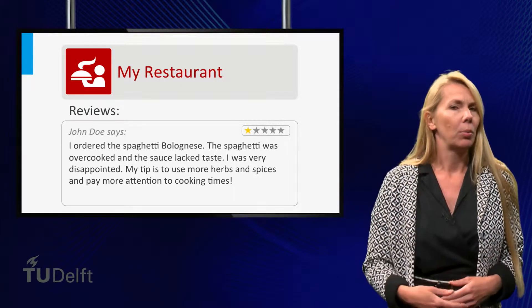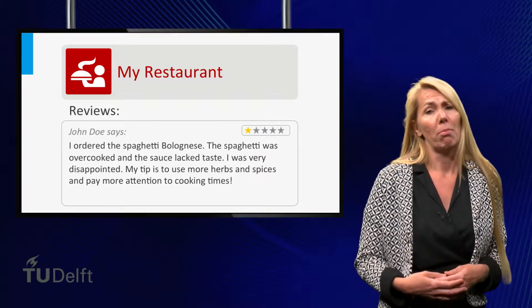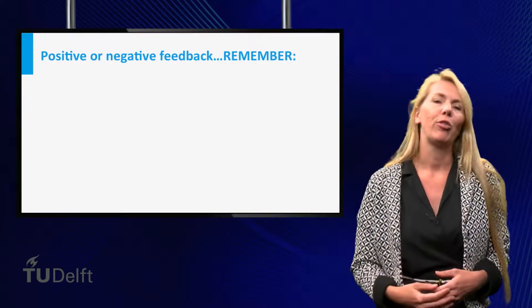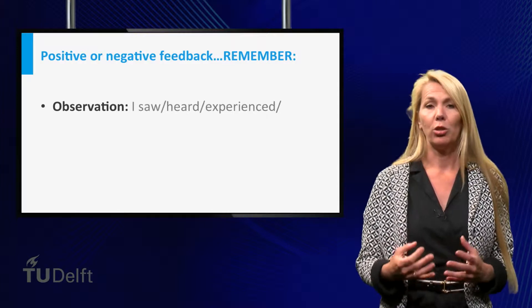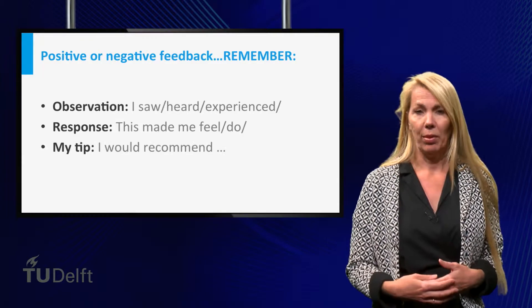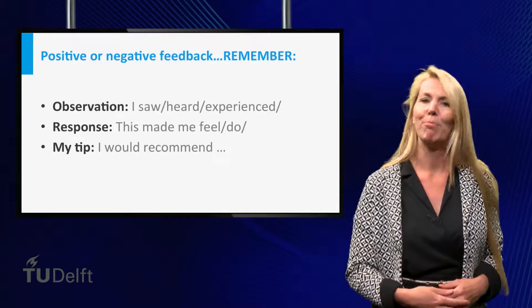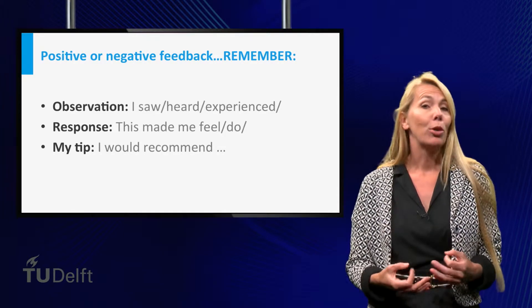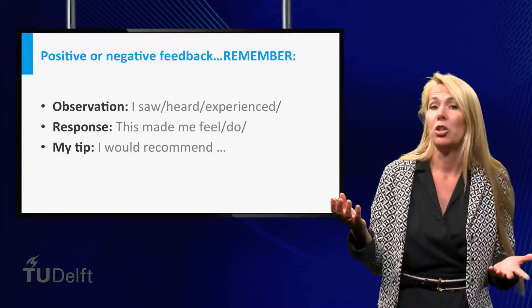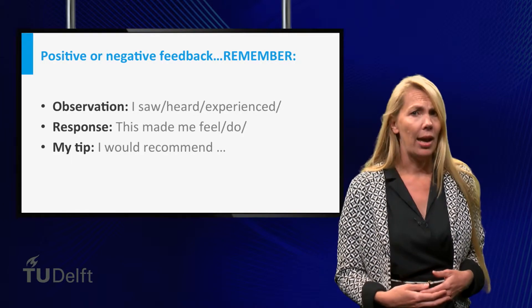You can imagine that a comment like 'your chef doesn't know how to cook spaghetti' might hurt a person much more than 'the spaghetti was overcooked.' So keeping your feedback focused on the end result rather than on the person who made it will make your feedback easier to accept, and therefore make the chances of a person improving much higher. The same goes for feedback on behaviour. It's better to say 'I see you didn't finish your work in time' than to say 'I think you are lazy and unreliable.'